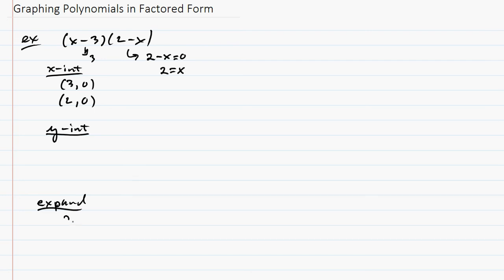So I'm going to FOIL. This would be 2x minus 6, and then we would have negative x squared minus 6. I'm just doing the plain old FOILing. So the standard form is going to be negative x squared plus 2x minus 12. Alright, so the y-intercept is (0, -12).